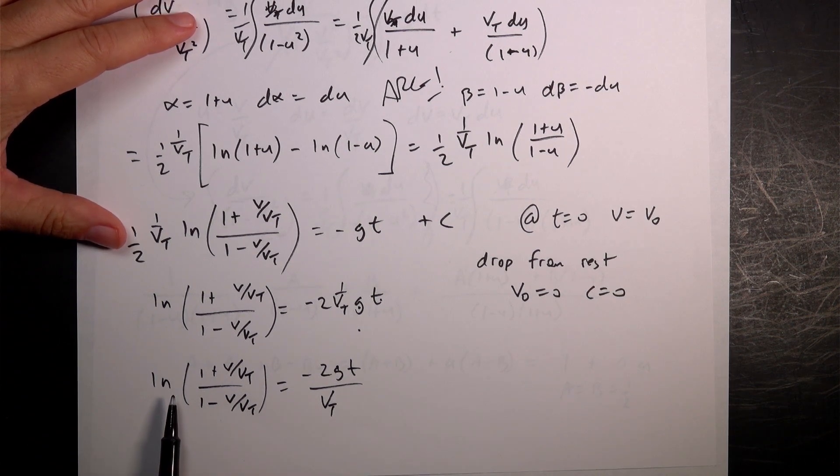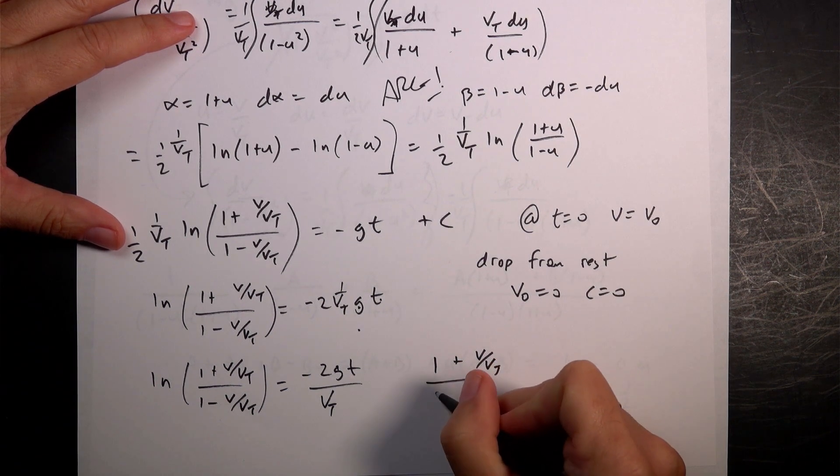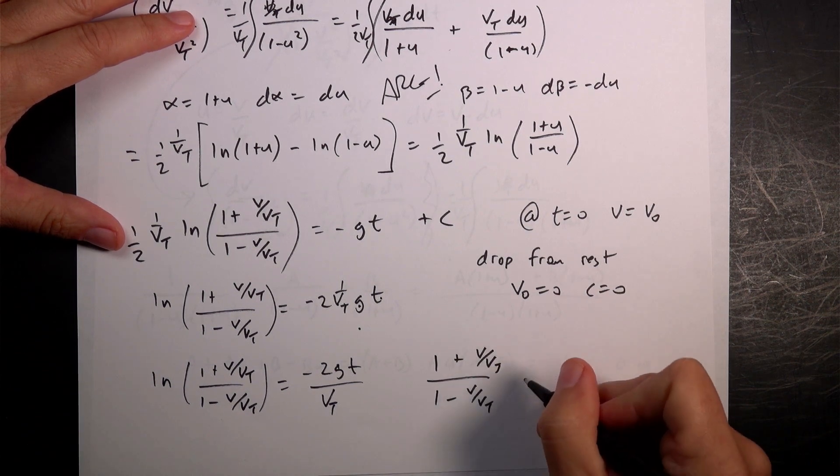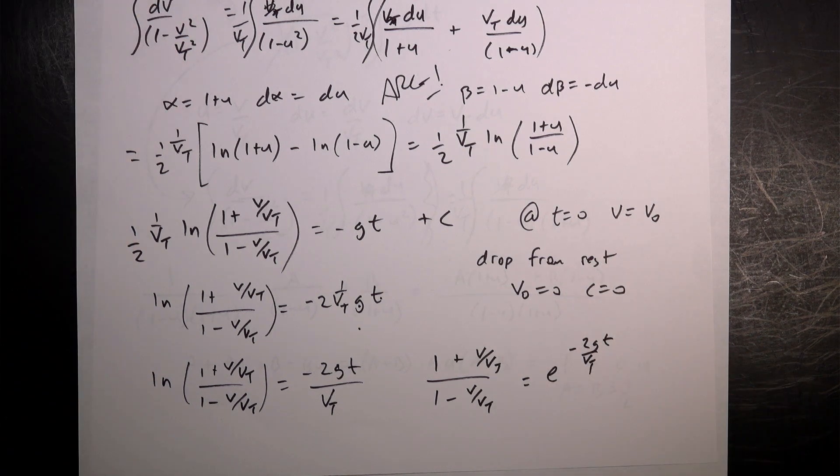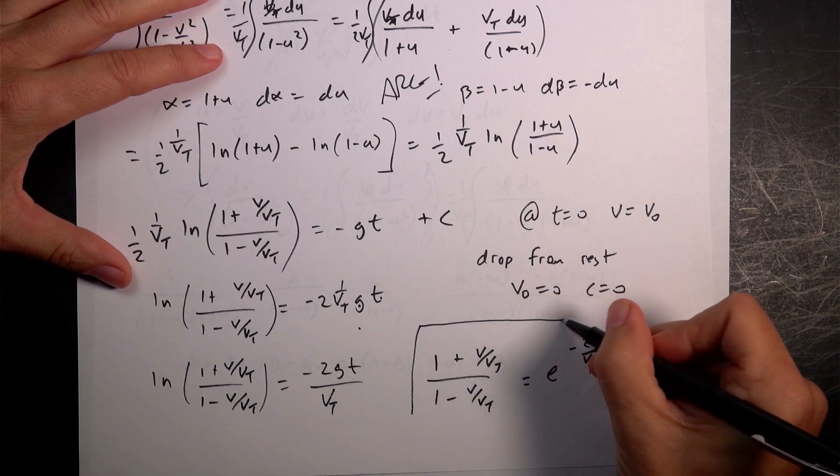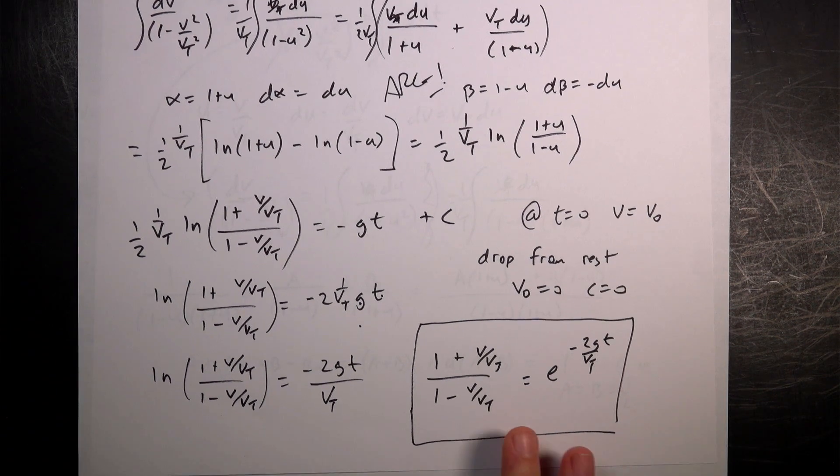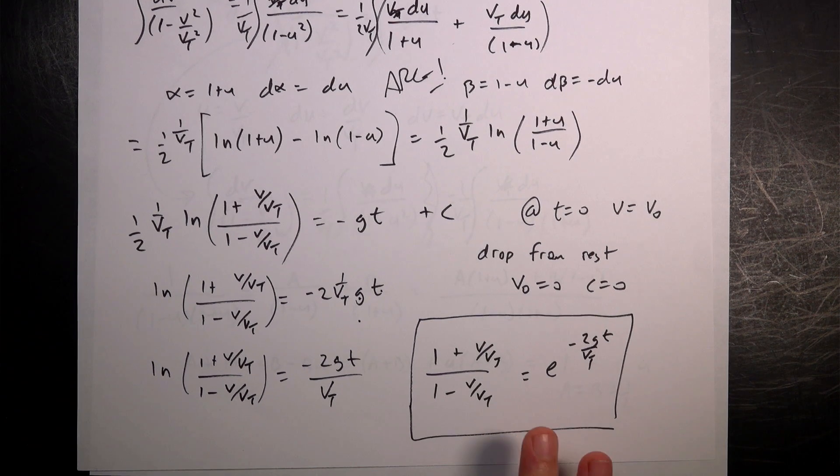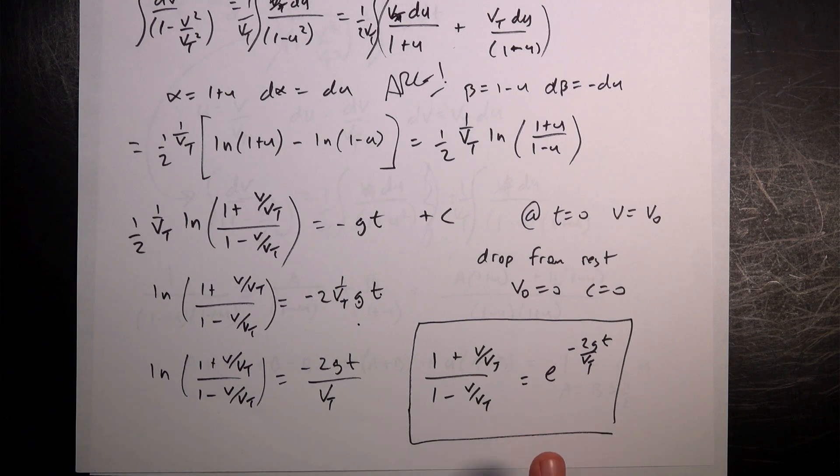So now I can take the inverse of both sides and I get 1 plus v over vt over 1 minus v over vt equals e to the negative 2 gt over vt. And now I want to solve for v. This is not fun. I think I'm going to stop there. Okay. I think algebraically you could solve this for v. Okay. There are some other math tricks that you could do. I think I have effectively done that. And so what I'll do is just leave that there.